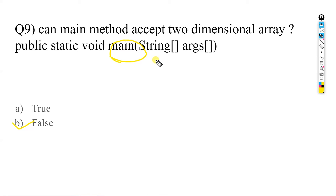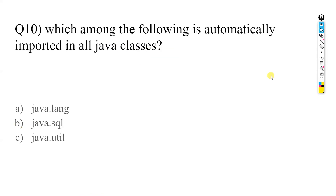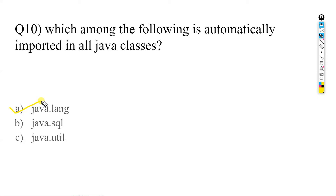Which among the following is automatically imported in all Java classes? The options are java.java, java.lang, java.sql, and java.util. The answer is A — java.lang is implicitly imported in all Java classes. You do not need to mention it explicitly. For other packages like java.util, you must import them explicitly.